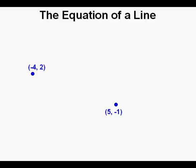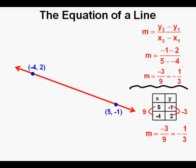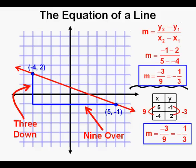Now let's look at these two points. We'll find the slope of the line connecting negative 4 comma 2 and 5 comma negative 1. I invite you to stop the video and see if you can work out the slope, then restart to see how you did. Using both the slope formula and the table version, either method yields the same answer: a slope of negative 1 third. By counting unit squares on a grid, we have 3 down and 9 over, giving a slope of negative 3 ninths, which reduces to negative 1 third.